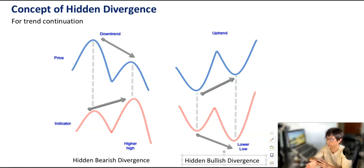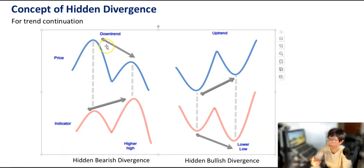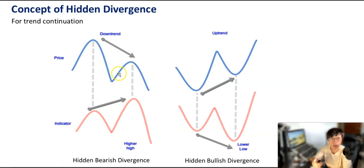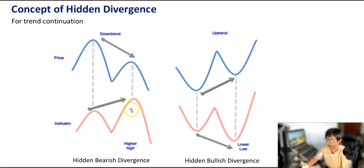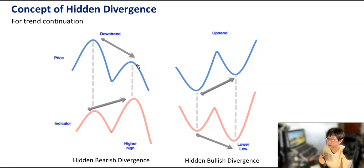Let's take a look at this chart, where I'm going to talk about trend continuation. If you're going to have a downtrend movement, price is making a lower high, then your indicator is likely going to show a higher high at the point of divergence. With that higher high, it says that the lower high you're seeing in price is likely to be a trend continuation.